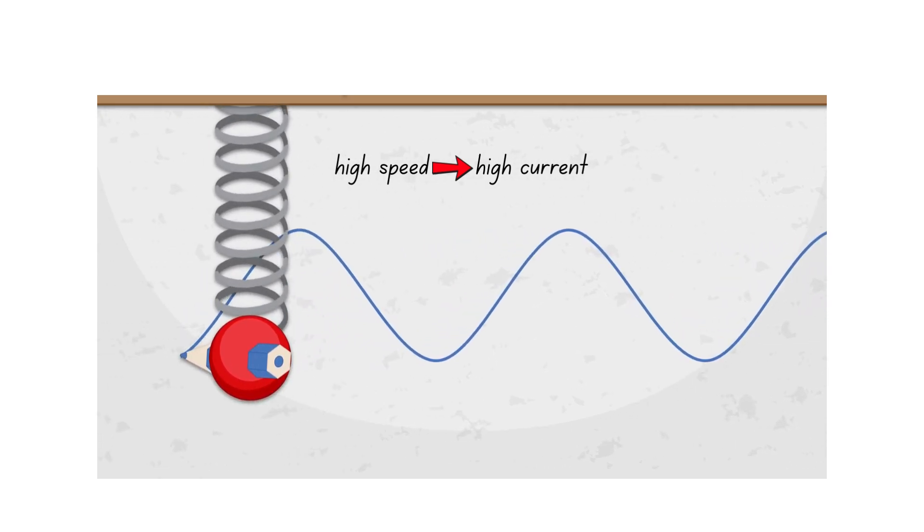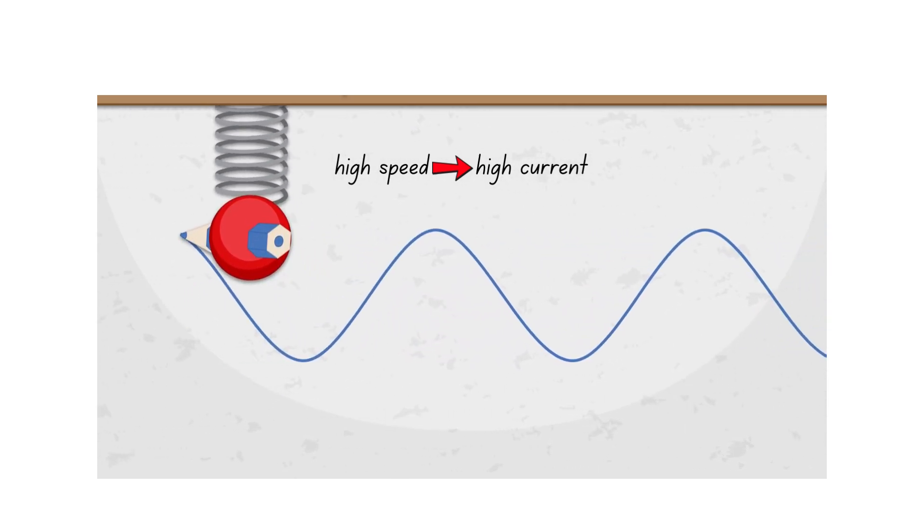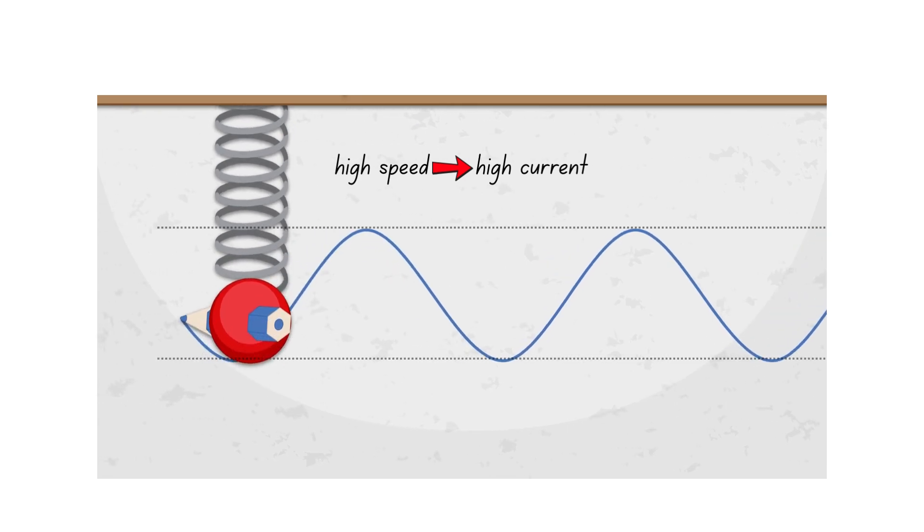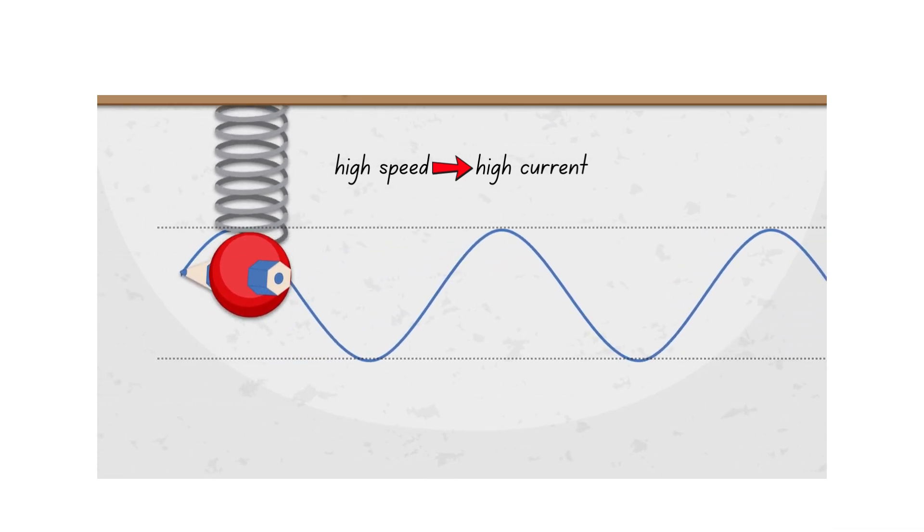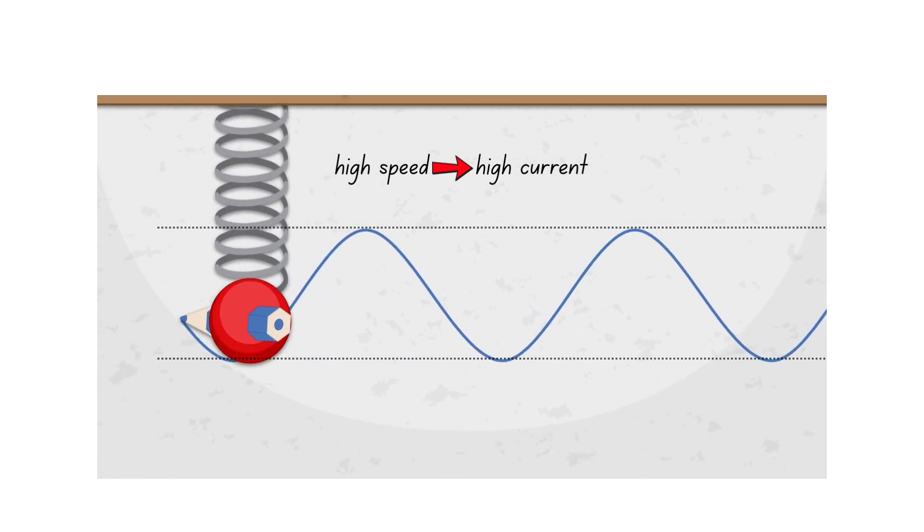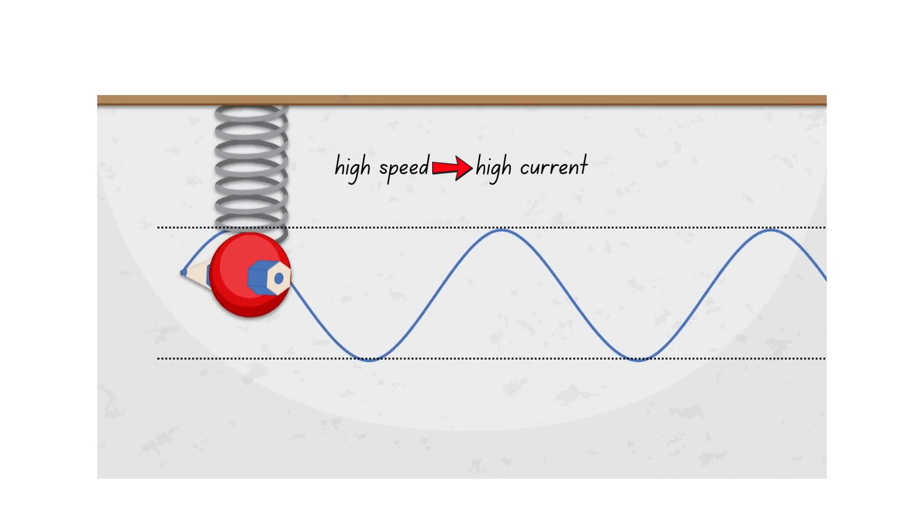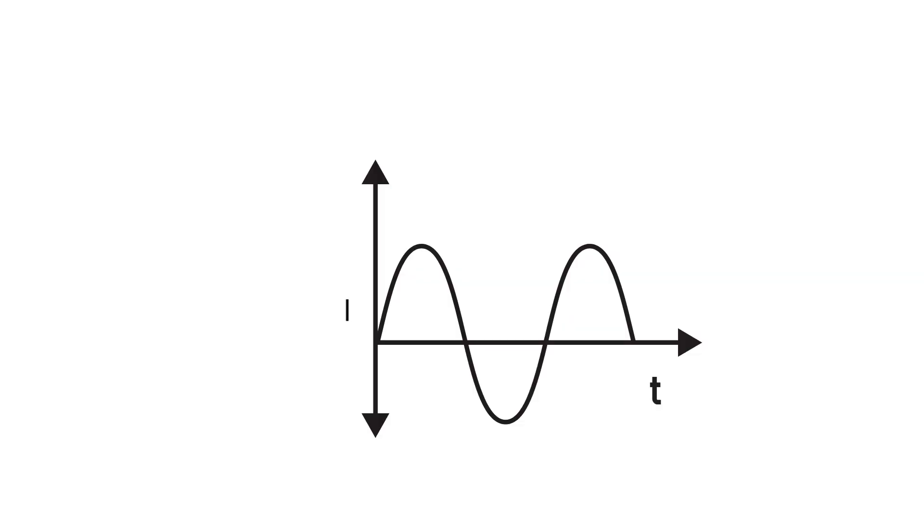By looking at the motion of the particle, we can see that there are moments when its speed is zero, which occur at the maximum displacements of the particle when it's about to change its direction. This tells us that AC also has instances when the current flowing is zero right before the change in direction of that current.